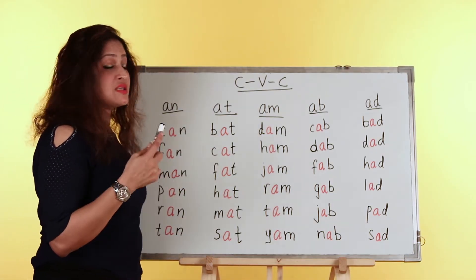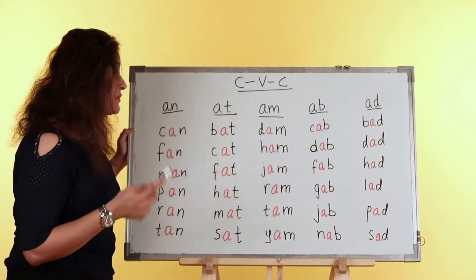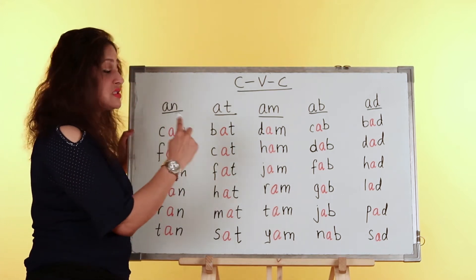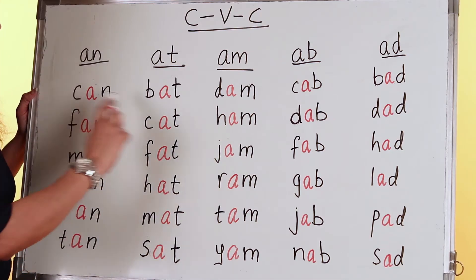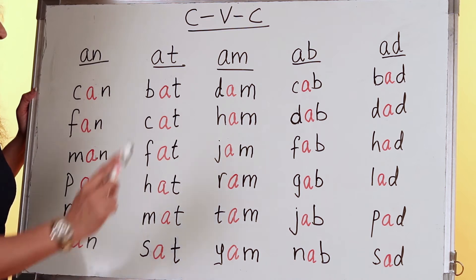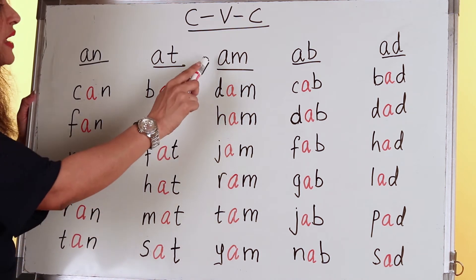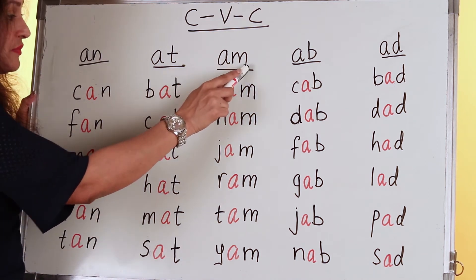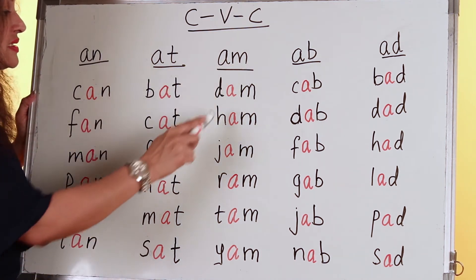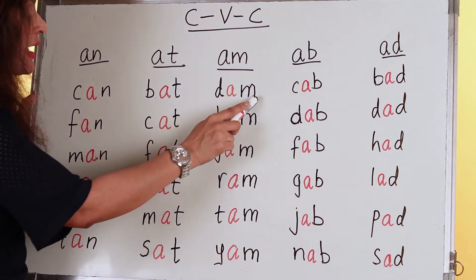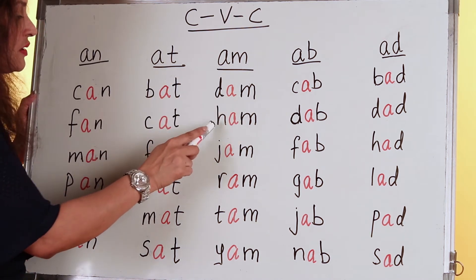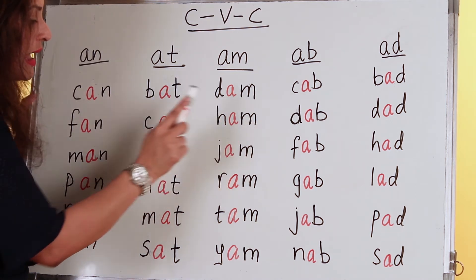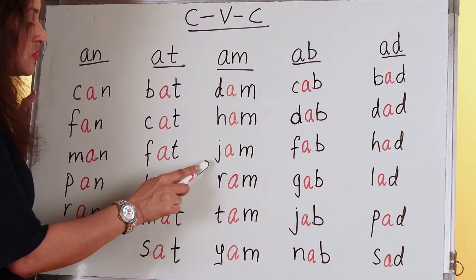You can add in more letters and make your own words. It doesn't matter if it doesn't make any sense — the point is that we are reading the letter sounds and putting the words together. Next we have the AM family. We start with DAM, HAM, JAM, RAM.